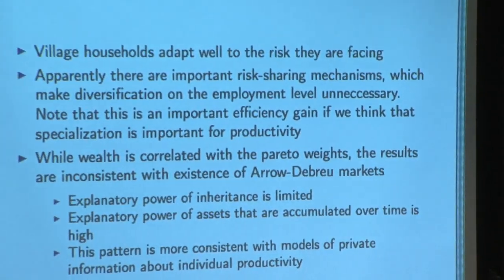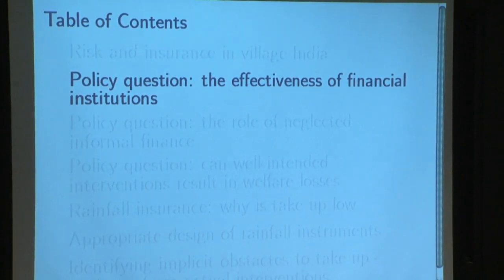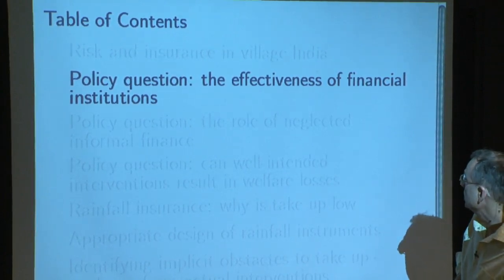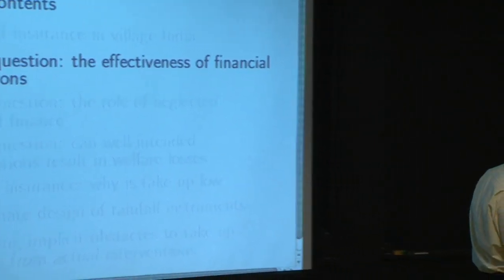That's risk and insurance in Village India. Let's take that framework and start knocking off some policy questions — first is about the effectiveness of financial institutions. The immediate policy implication coming out of Village India was: miraculously, somehow, they're pooling all that risk. It's not a bunch of fragmented households on their own in autarky — it seems to be more the opposite. But villages, even if they were amazingly good, are not necessarily interacting with each other.